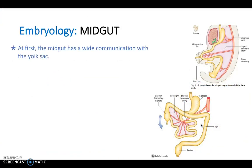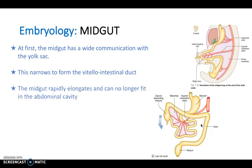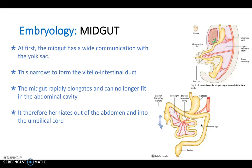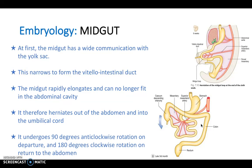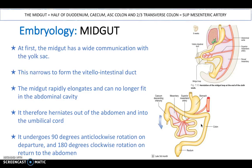For midgut structures: at first the midgut has a wide communication with the yolk sac, which narrows to form a vitello-intestinal duct. The midgut rapidly elongates and can no longer fit in the abdomen, so it herniates out into the umbilical cord, undergoes rotation, and then returns to the abdomen. The midgut is supplied by the superior mesenteric artery.